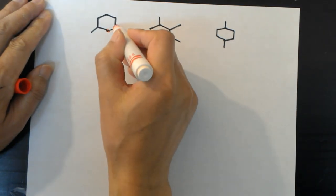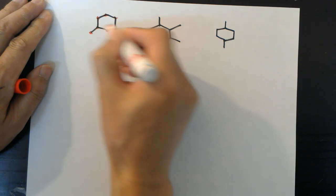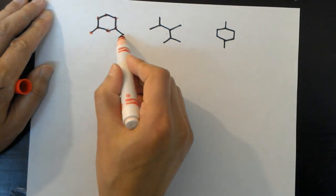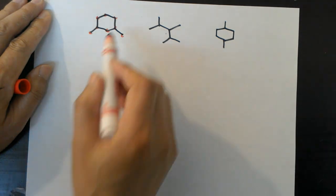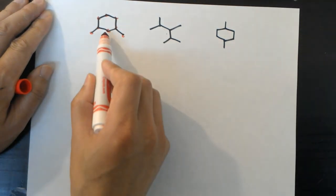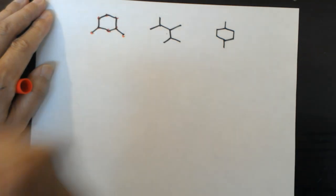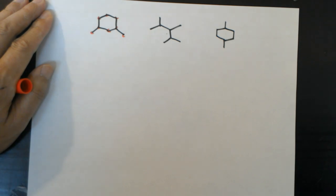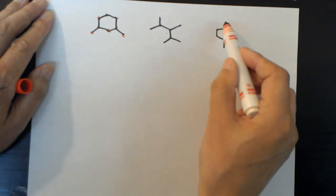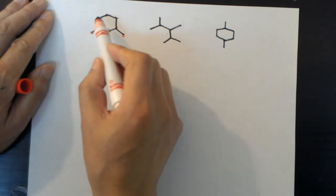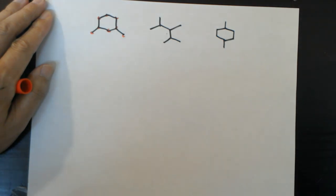In a condensed line-angle drawing, all vertices and endpoints are carbons. Based on the number of bonds shown you can figure out how many hidden hydrogens each carbon has. A terminal carbon bonded to only one neighbor has three hydrogens (CH₃). A carbon with two connections has two additional hydrogens (CH₂). A carbon with three connections has one hidden hydrogen (CH). So: two CH₃, two CH, and four CH₂ groups in this example.